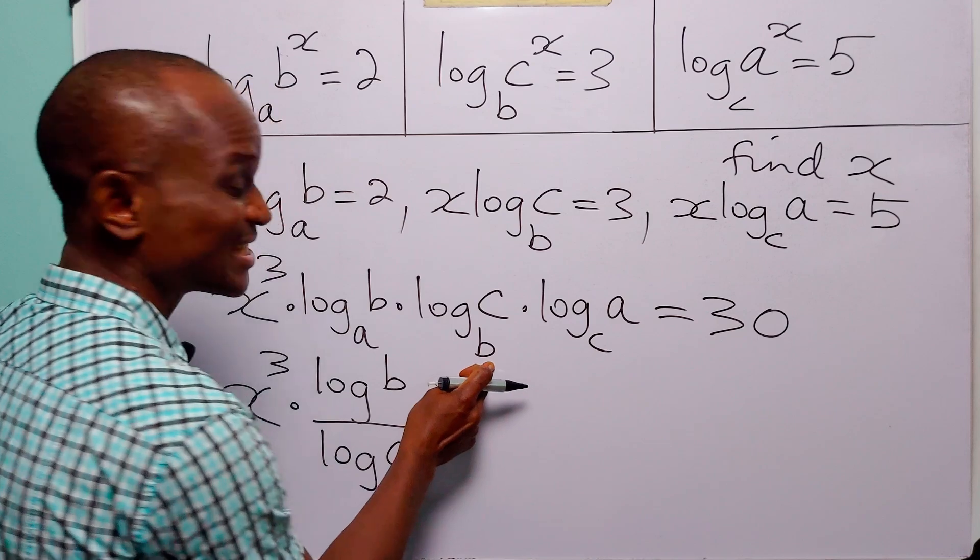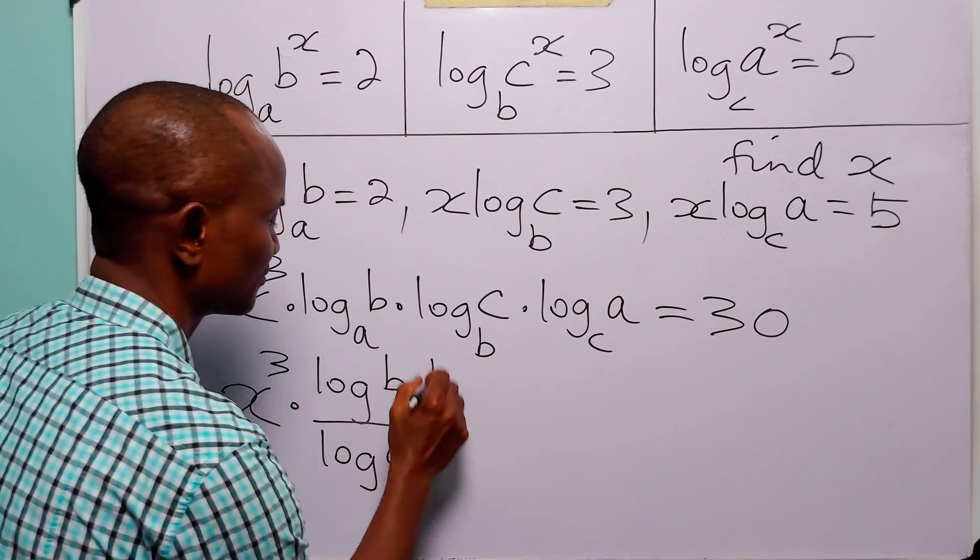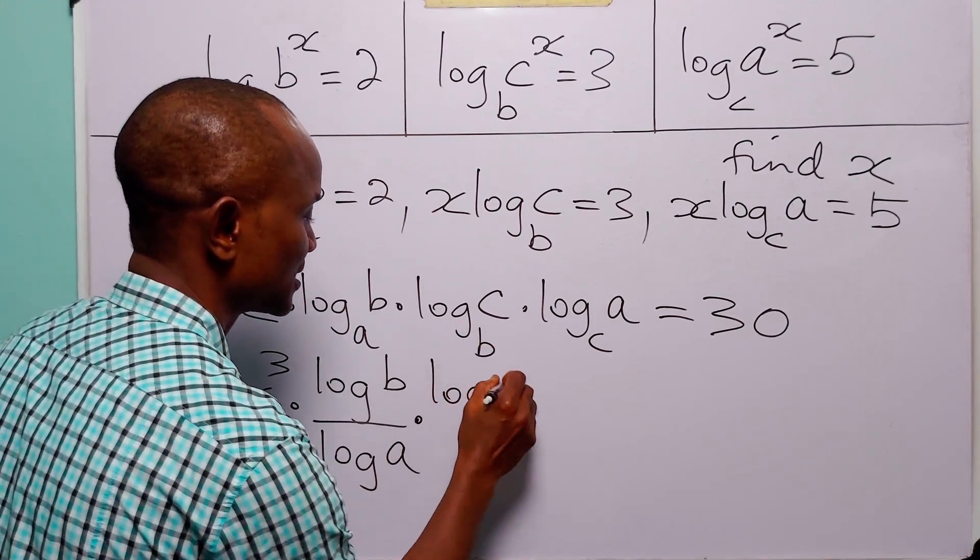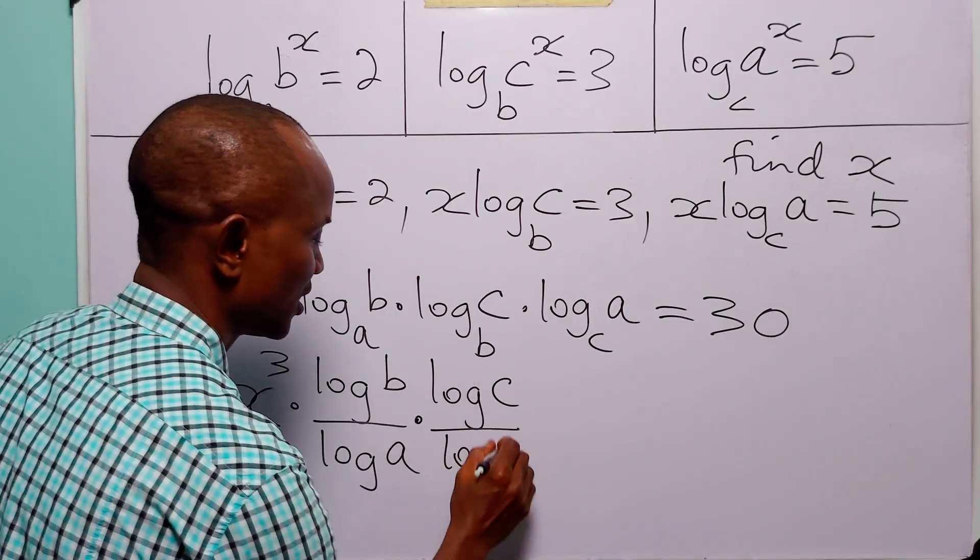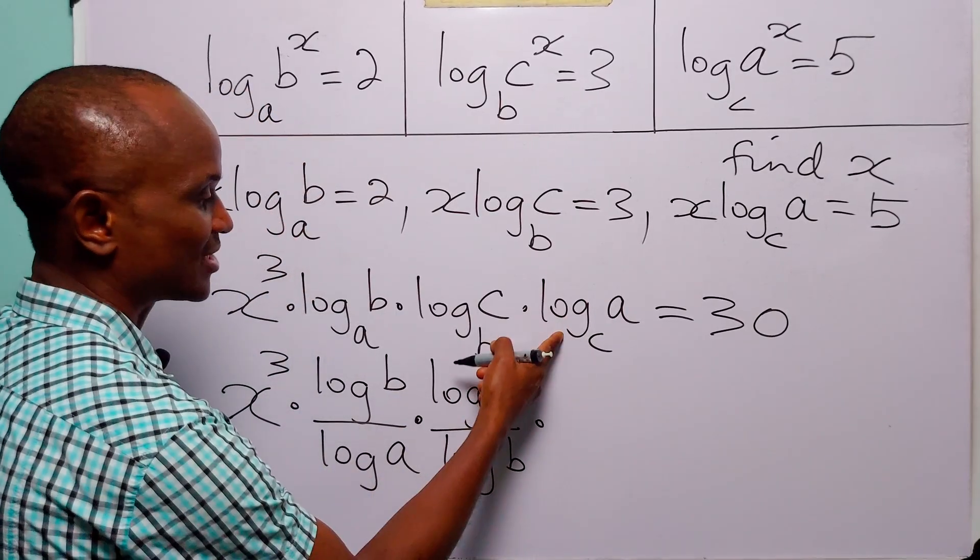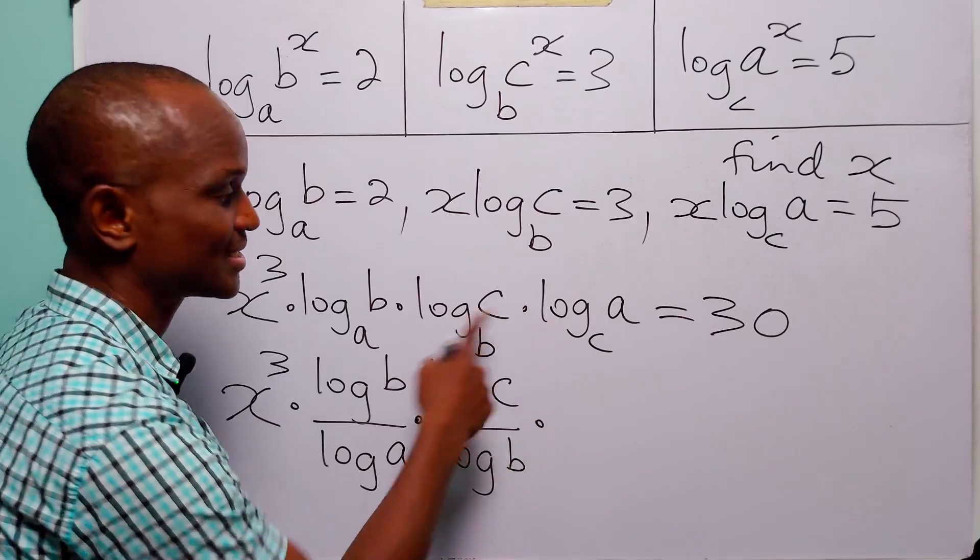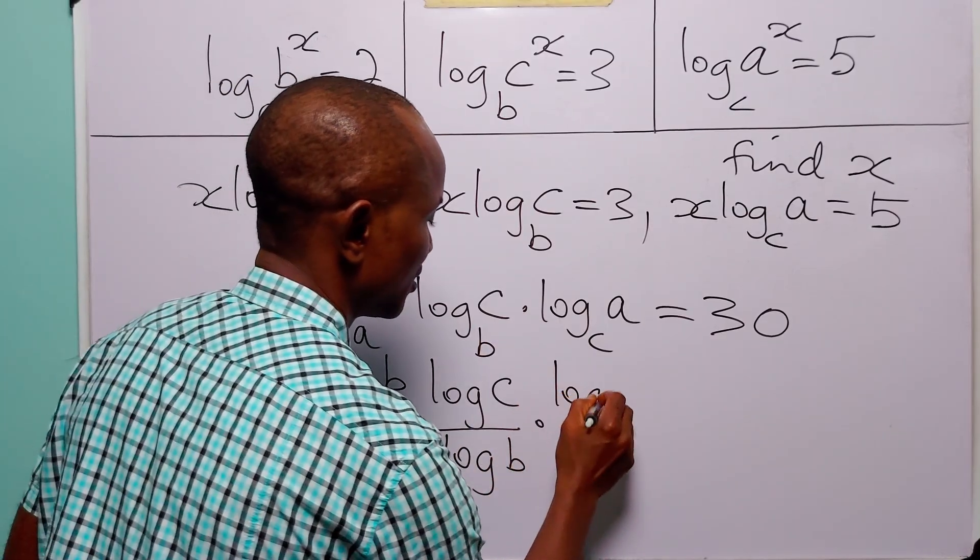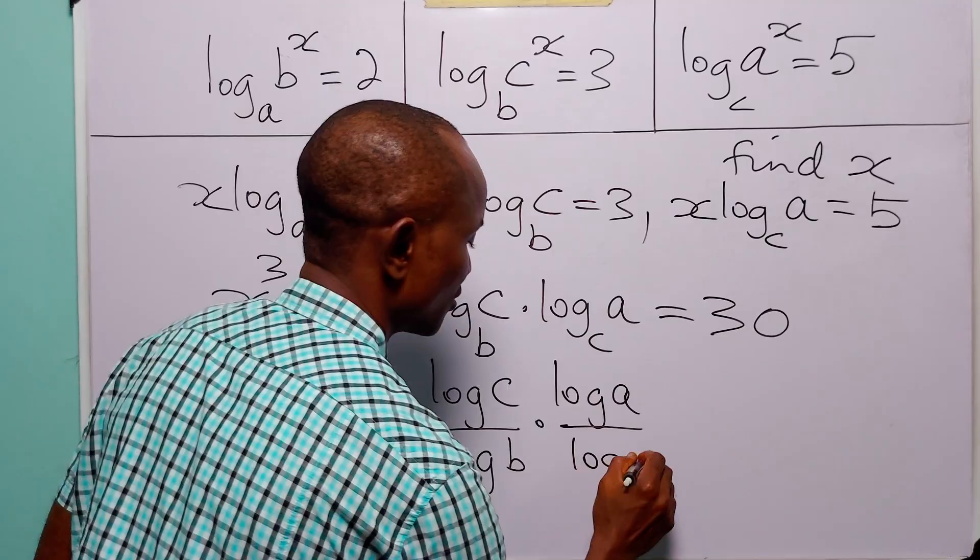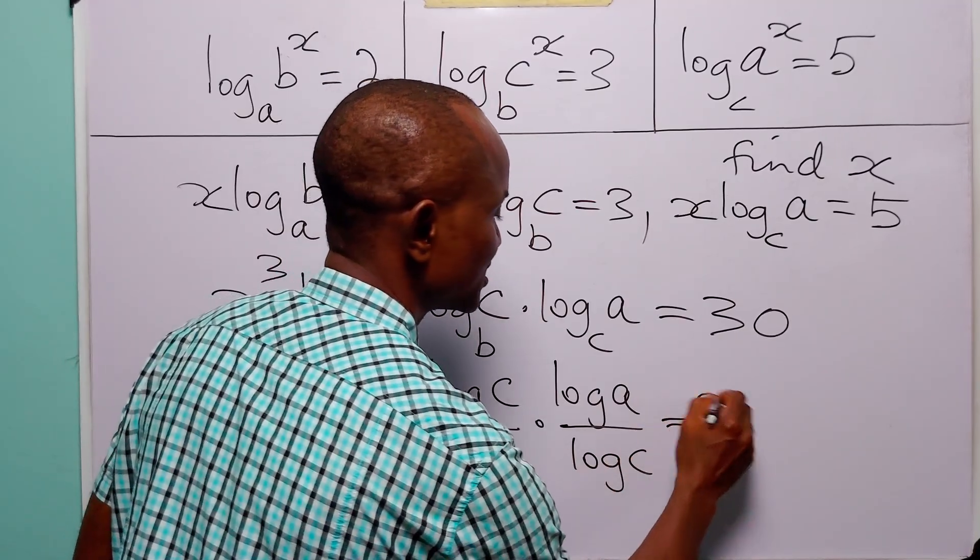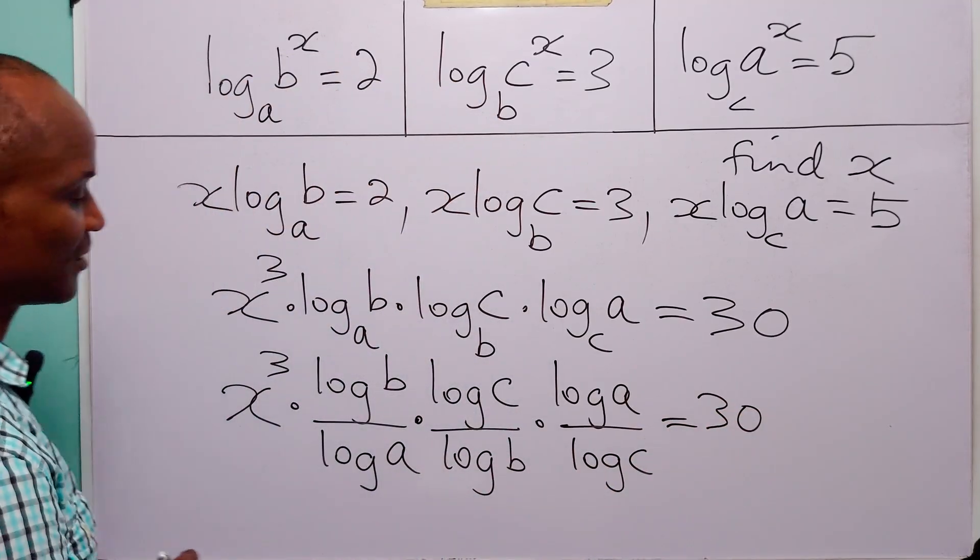Changing this from base b to base 10 we have log c over log b. And likewise changing this from base c to base 10 we have log a over log c. And of course this remains equal to 30.